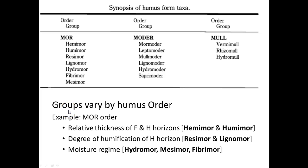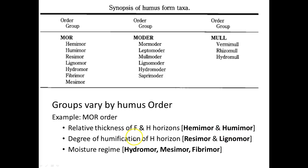This week in lab you'll be given a sample of a mor, moder, and mull and will classify these orders into their groups. Within a mor there are a number of different mor types. The relative thickness of the F and H horizons will differentiate the hemimor and the humimor. The degree of humification of the H horizon will differentiate the resimor and the lignomor.